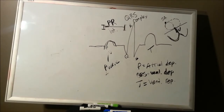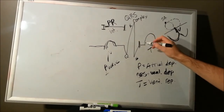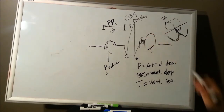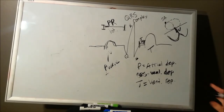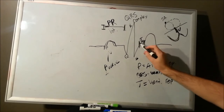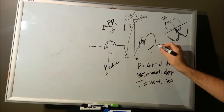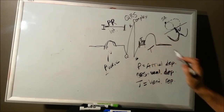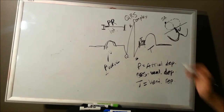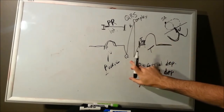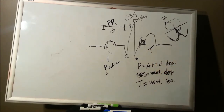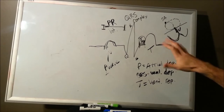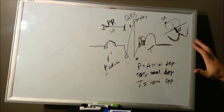Then you've got your ST segment, which goes from your S wave to the beginning of your T wave. In a normal healthy heart, the ST segment sits on the isoelectric line. It represents the time between your ventricles depolarizing and the beginning of ventricular repolarization — that period between the heart contracting and then relaxing. A long ST segment means more time before repolarization; a short ST segment means the heart contracts and repolarizes almost instantly.